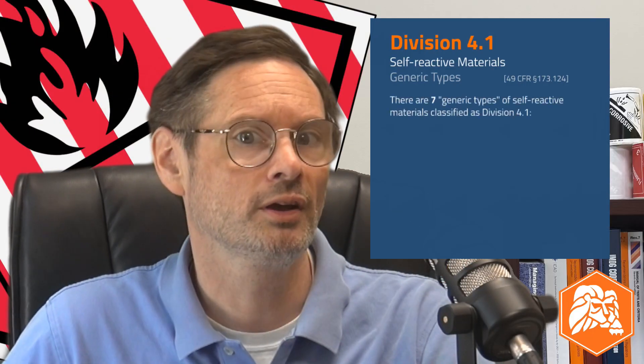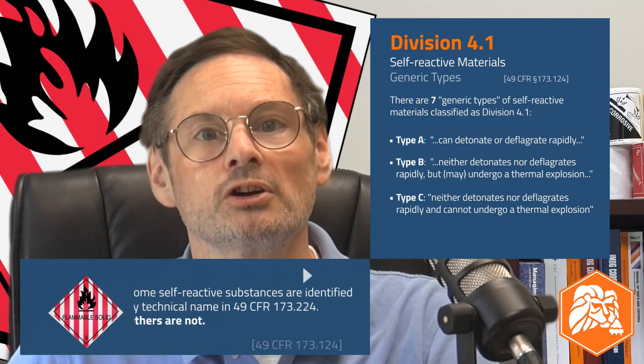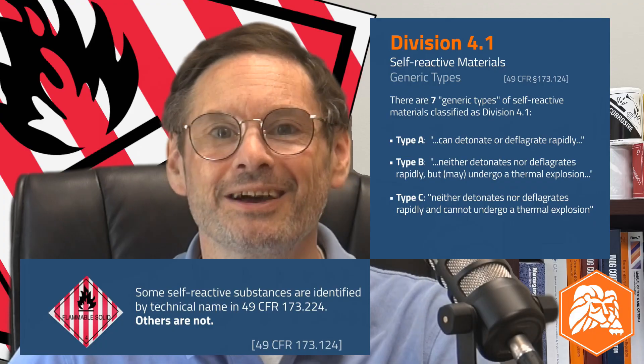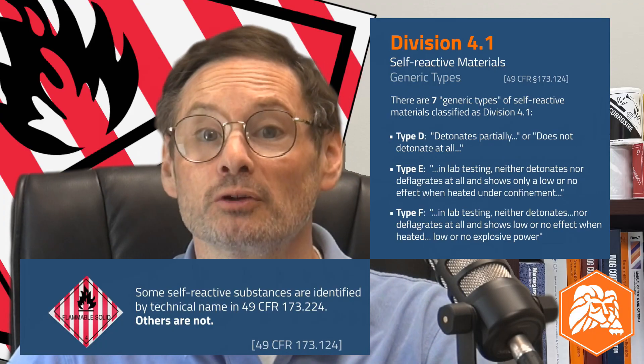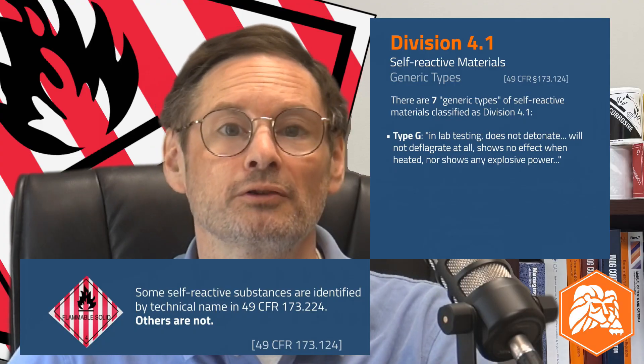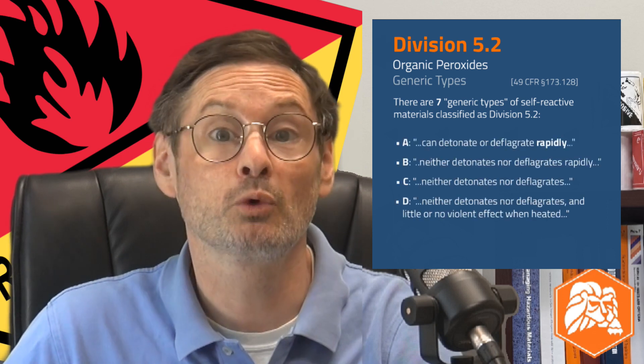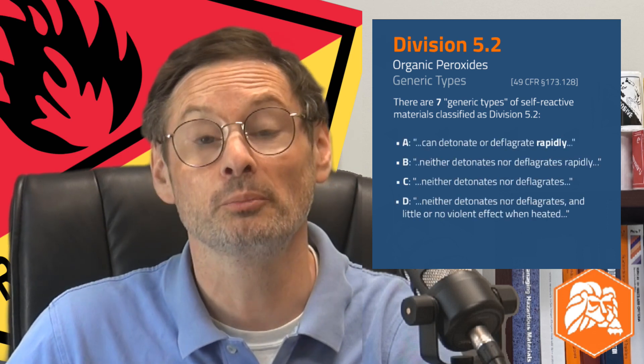In our last video, we talked about packing group for Division 4.1 flammable solids — all except one type: self-reactive materials. These Division 4.1s are assigned one of seven generic types, A through G, based on their likelihood to react dangerously during transportation and the level of hazard. Division 5.2 organic peroxides are categorized the same way as 4.1 self-reactives, in groups A through G. They even use similarly worded criteria to describe each group.